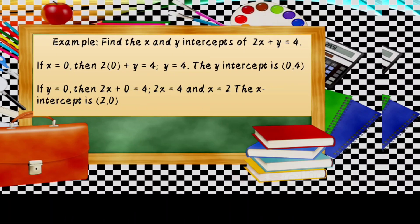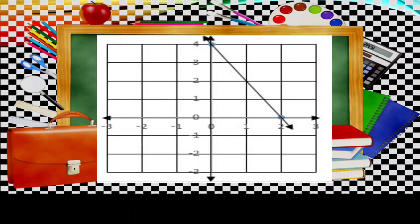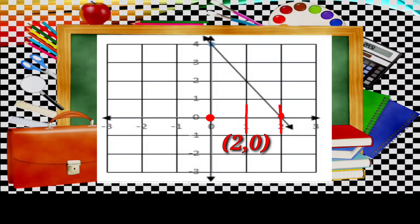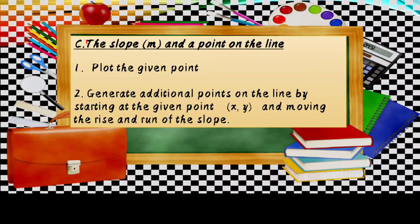We plot the ordered pairs on the graph. For the point (0, 4), starting from the origin, we move upward four units: 1, 2, 3, and 4 — that is the first ordered pair. For the point (2, 0), we move to the right two units: 1 and 2 — that is the second ordered pair.